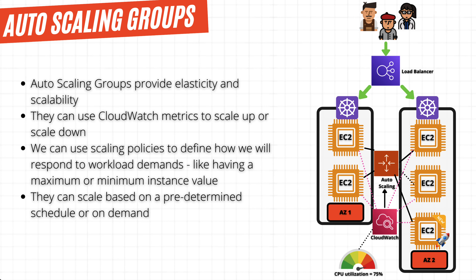And this whole process can happen automatically. Auto-scaling groups provide elasticity and scalability to our cloud infrastructure. The way they do this is by allowing us to configure the minimum capacity, the desired capacity, and the maximum capacity. They also allow us the ability to use CloudWatch to scale up or scale down based on the metrics that CloudWatch is collecting.